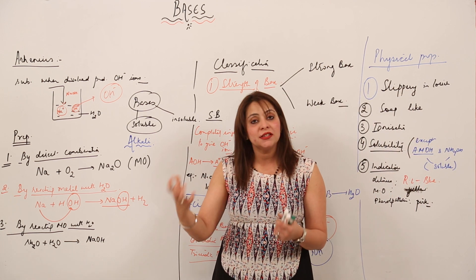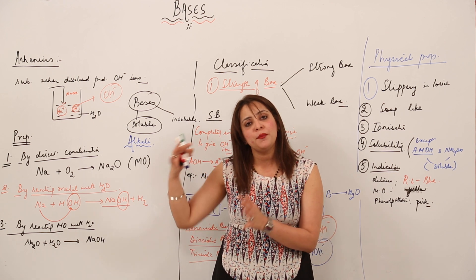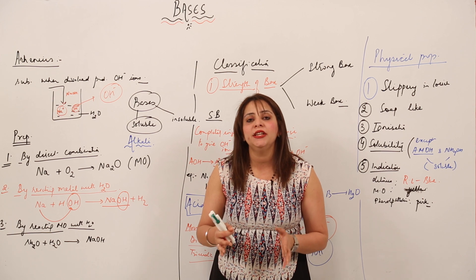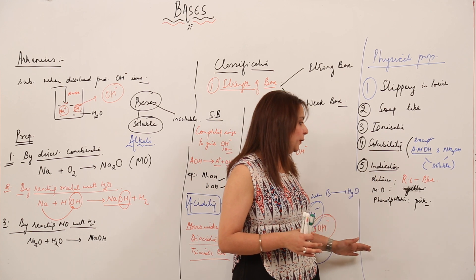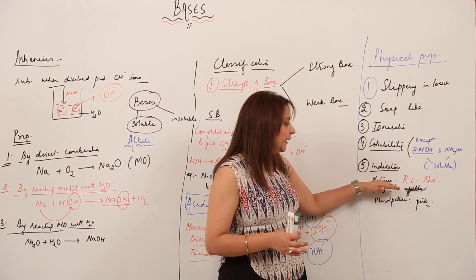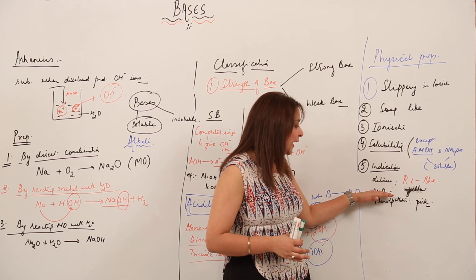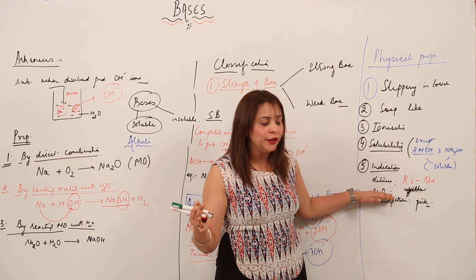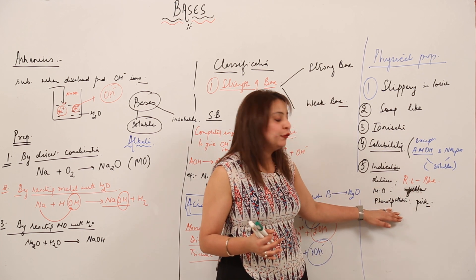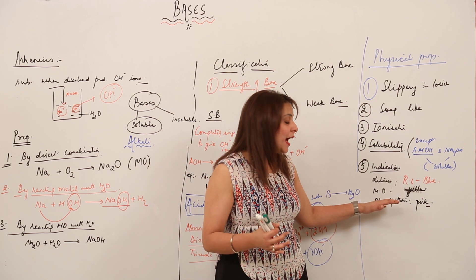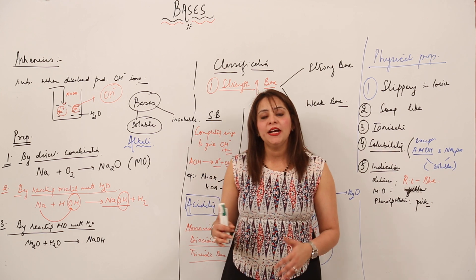Indicators are substances that change color when a substance is added to them. On litmus, bases turn red litmus blue. On methyl orange, which is originally orange, bases produce a yellow color. On phenolphthalein, which is originally colorless, adding a base changes its color to pink. Next, we will take up the chemical properties.